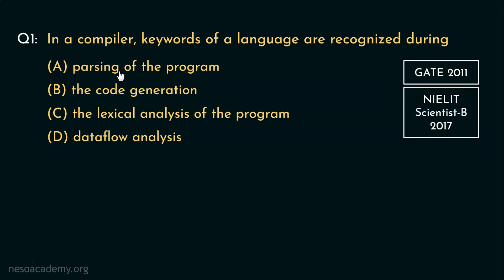And there the inputs are the tokens. So keyword being a token should be recognized before that. Next option is the code generation. Optimized code is taken as input in that phase, and as an output, assembly language code should be generated. So keywords have to be recognized way before that.